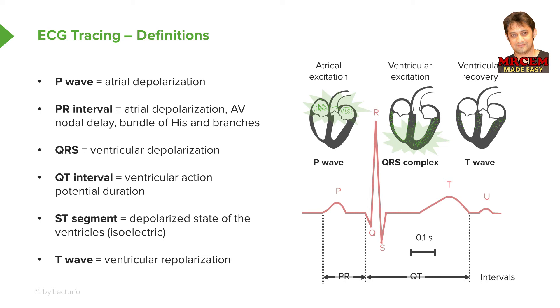So our primary things are: P wave, PR interval, QRS, QT interval, ST segment, and T wave.